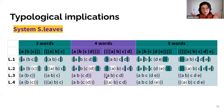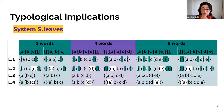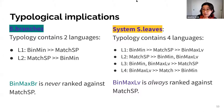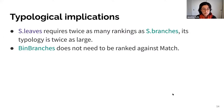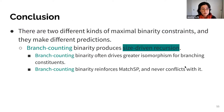Looking at more of the leaf counting typology, in languages three and four where leaf counting is ranked over match, there are exhaustivity violations throughout, even for five-word cases, where three words end up parsed directly to the intonational phrase. Comparing the two typologies: in the branch counting system the typology contains two languages — one where bin-min is over match, one where match is over bin-min — and bin-max-branches is never ranked against match-SP. In the leaf counting system there are four languages, because we need to rank both bin-min and bin-max-leaves against match-SP. S-leaves requires twice as many rankings as S-branches and its typology is twice as large as a result. Bin-branches doesn't need to be ranked against match, as expected.